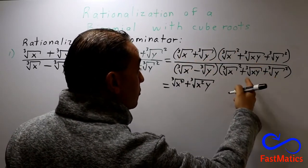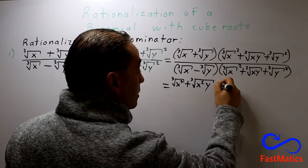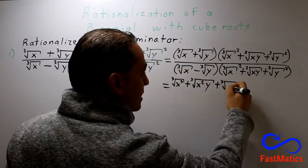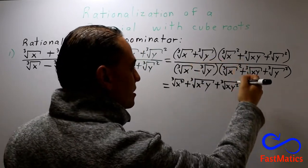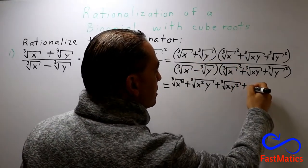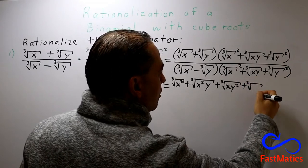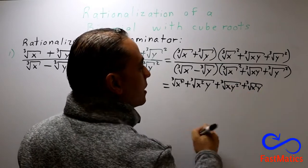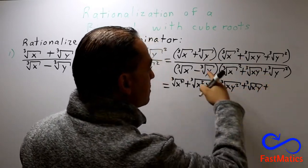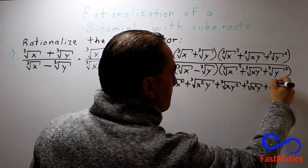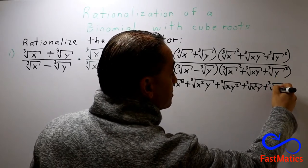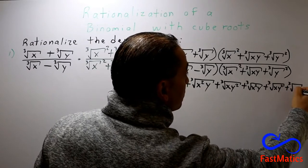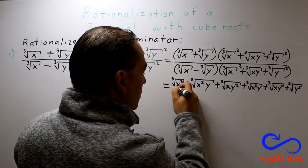After that, the second times the first is plus the cube root of x squared y, giving us x squared times y. After that, plus the cube root of x y squared. And finally, plus the cube root of y cubed — over the denominator.